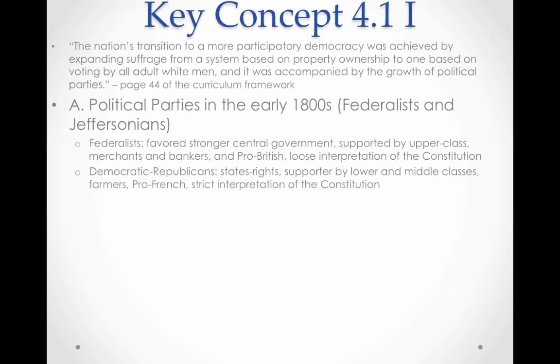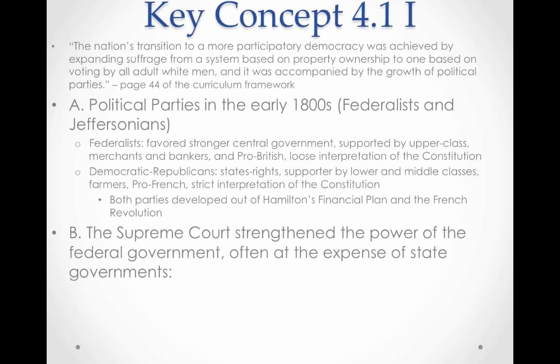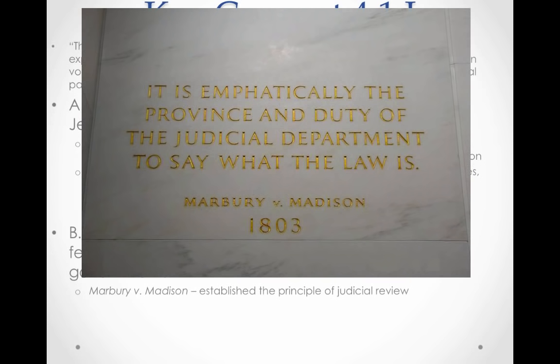On the other hand, the Democratic-Republicans, also known as the Jeffersonians, were more states'-rights oriented and were supported by the lower and middle classes, especially farmers. They were pro-French in foreign affairs because of France's help during the American Revolution and also because of the French Revolution's nod to the American Declaration of Independence. They favored a strict interpretation of the Constitution — unless the Constitution said you could do something, you couldn't.